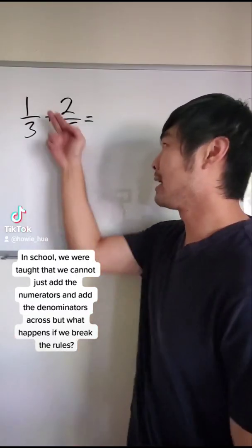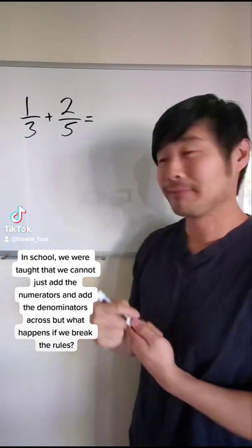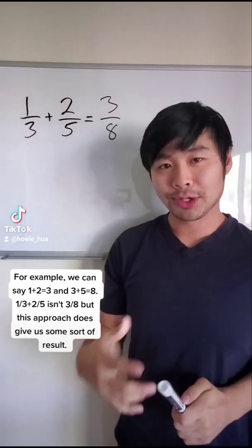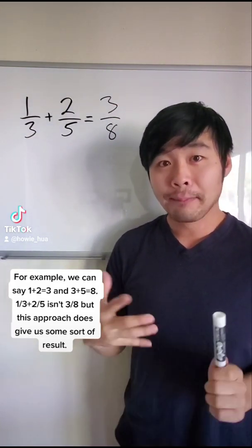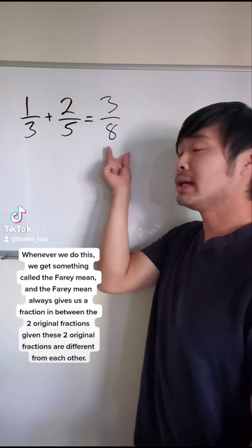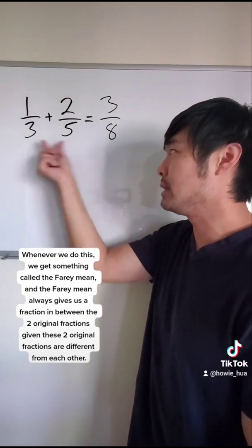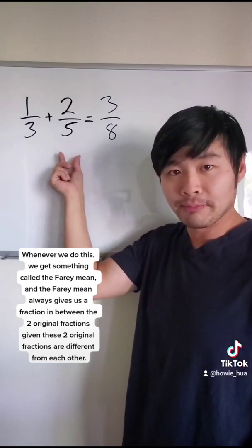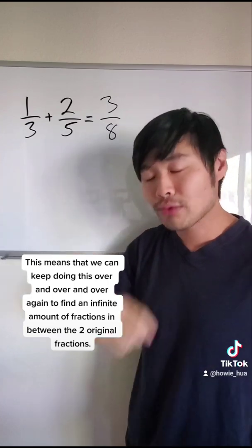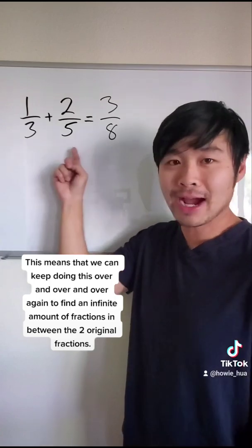In school, we were taught that we cannot just add the numerators and add the denominators across, but what happens if we break the rules? For example, we can say one plus two is three and three plus five is eight. One third plus two fifths is in three eighths. But this approach does give us some sort of result. Whenever we do this, we get something called the fairy mean. And the fairy mean always gives us a fraction in between the two original fractions, given that these two original fractions are different from each other.